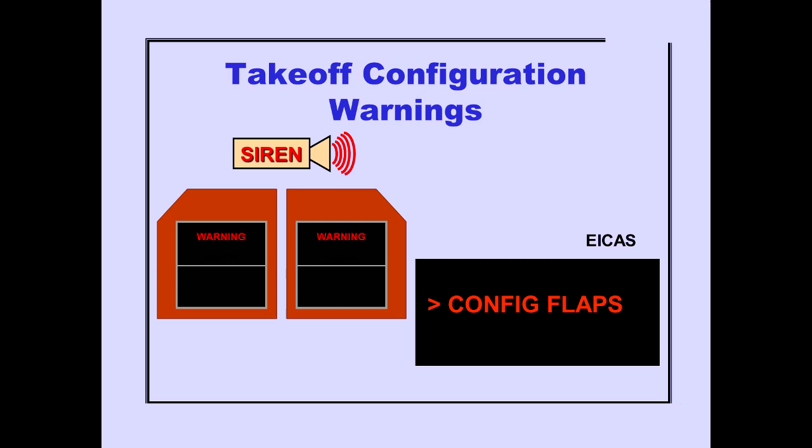The takeoff configuration warning consists of activation of the warning siren, illumination of the master warning lights, and an ICAS warning message. The warning remains until a configuration error is corrected.